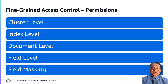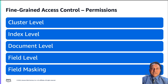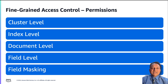With fine-grained access control, there are different types of permissions you can set up. First, cluster-level permissions include the ability to make broad requests such as _mget, _msearch, and _bulk, monitor health, take snapshots, and more — managed using the cluster permissions section when creating a role. Second, index-level permissions include the ability to create new indices, search indices, read and write documents, delete documents, manage aliases, and more — managed using the index permissions section when creating a role.